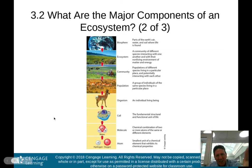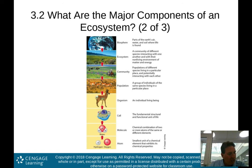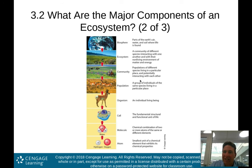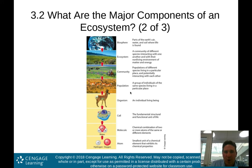Here's a picture putting that into visual form. We're going to be more concerned with the top five levels: biosphere, ecosystem, community, population, and the individual organism. The diagram explains in words what was just described — population is a group of organisms, community is populations of different species.